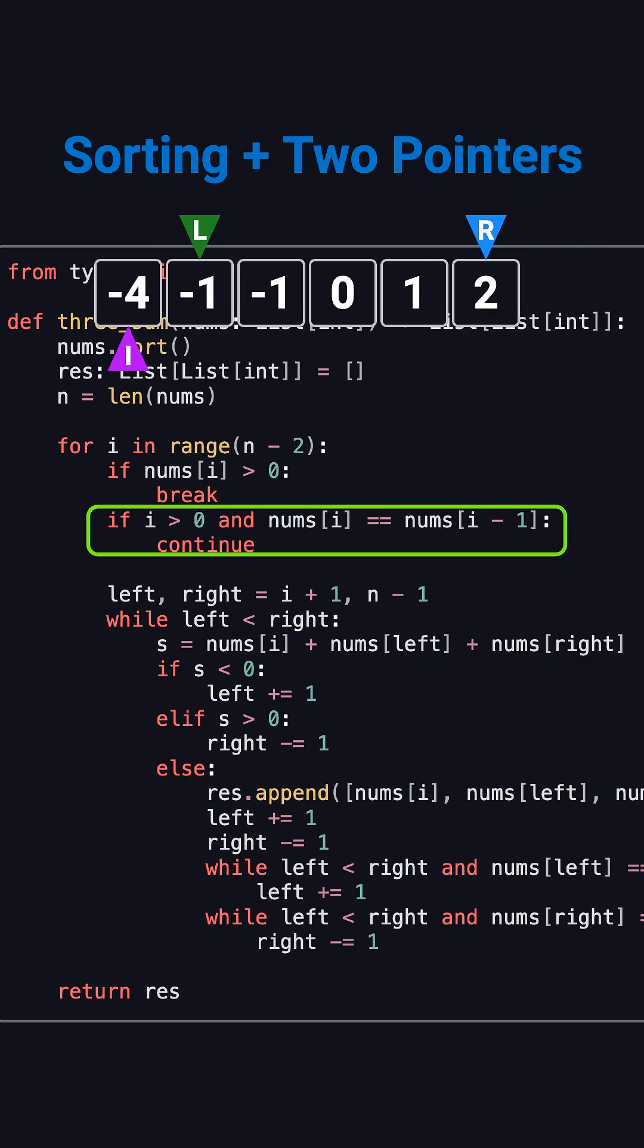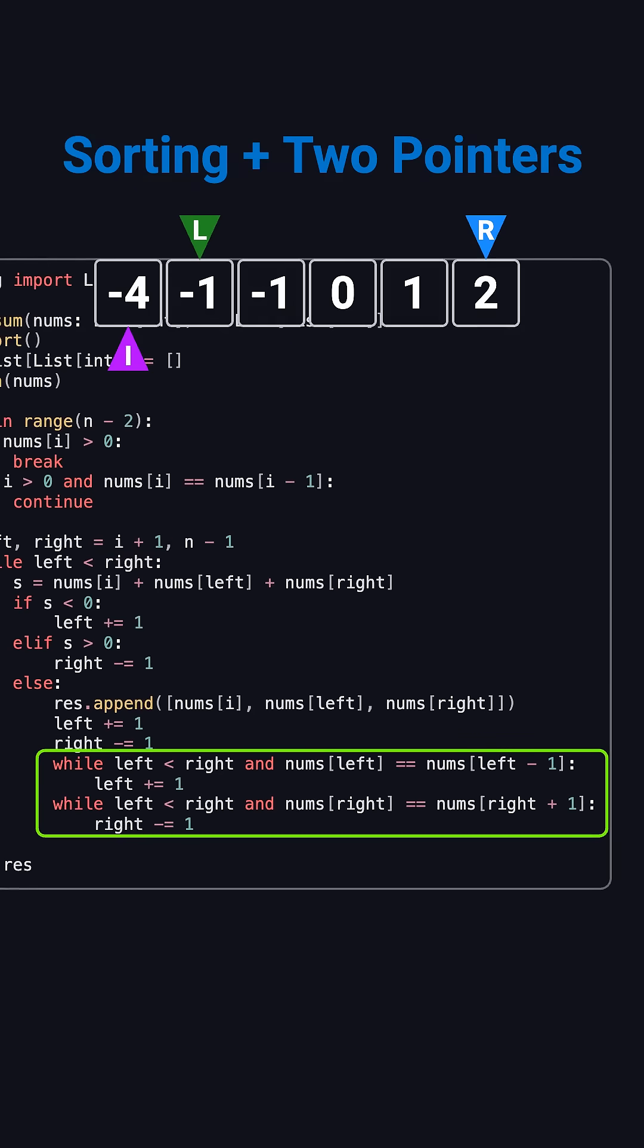There are two simple rules to avoid duplicates. First, if the number at index i is the same as the previous one, we skip it. Second, after finding a valid triplet, we move both pointers and skip over any consecutive duplicate values.